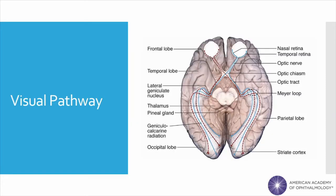At birth, infants have blurry vision, which then improves as a child grows and develops connections between the eyes and the brain. Normally, after a visual stimulus reaches the retina in the back of the eye, the signal travels from the retina to the optic nerve and then projects to the lateral geniculate nucleus of the thalamus. There, neurons in the LGN travel to the primary visual cortex in the occipital lobe as shown here. Most of the structures involved in this pathway are constructed before birth. However, as we grow, these connections in the pathway are still forming during the critical period.